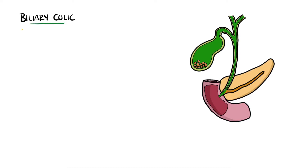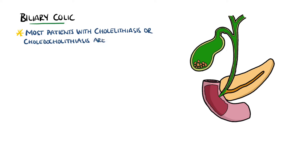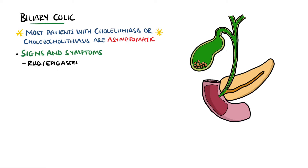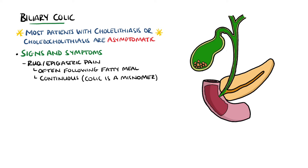Cholelithiasis is the presence of gallstones in the gallbladder, while choledocholithiasis is the presence of gallstones in the common bile duct. Most patients are asymptomatic, with a higher rate of symptoms in choledocholithiasis. Biliary colic is the term given to the presence of symptoms resulting from the stones that later resolve. The primary symptom is pain from the contraction of the biliary tree against the stone, typically in the right upper quadrant or the epigastrium, often following a fatty meal. Although it is called a colic, biliary colic is actually more typically a continuous pain.